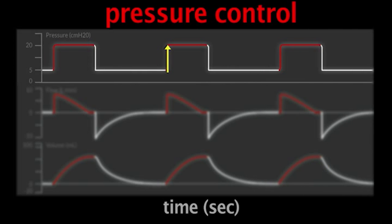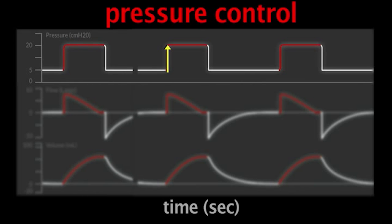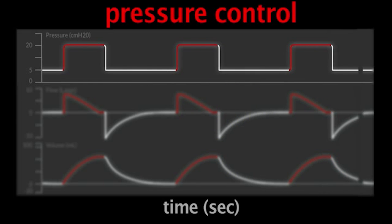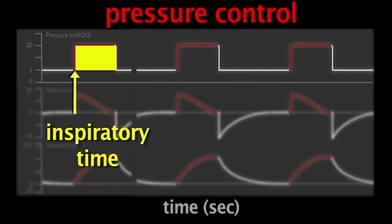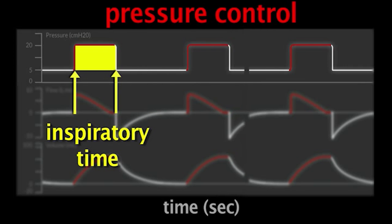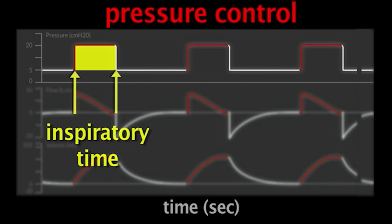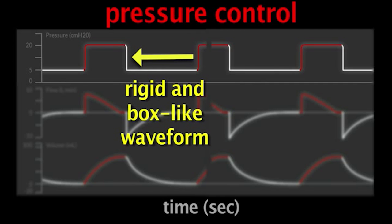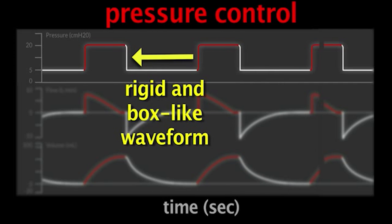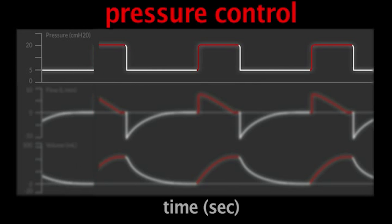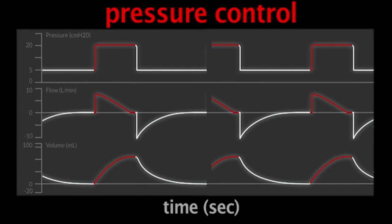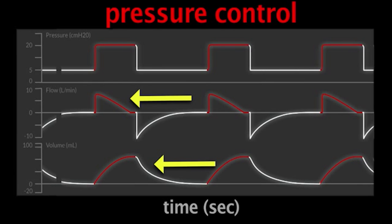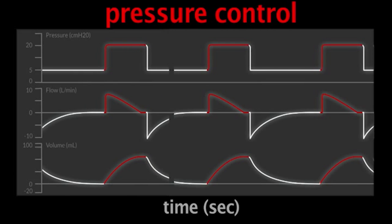When the ventilator cycles into inspiration — indicated by red here — we reach a peak inspiratory pressure of 20 centimeters of water. Furthermore, we can look at the time scale and calculate the inspiratory time set on the ventilator. You can see that the pressure waveform is very rigid and box-like. The variable being controlled — in this case pressure — will have this controlled feel. The other waveforms, flow and volume, will look slightly more organic because they depend on the patient's compliance and airway resistance; they are essentially uncontrolled variables.